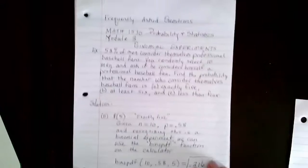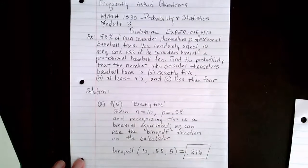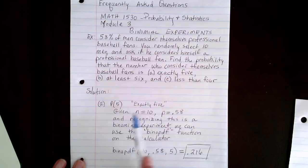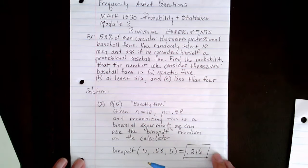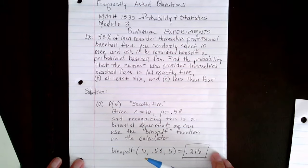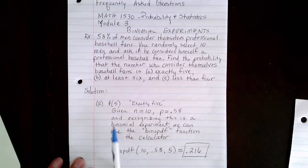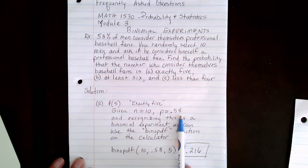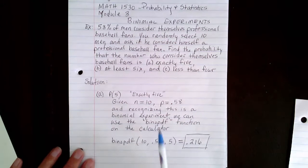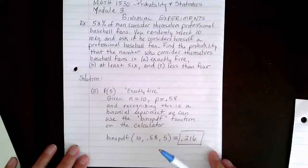Now let's go back to our problem and look at the solution. For part A, we were asked to find the probability that exactly 5 of the 10 men said they were baseball fans. We recognize this is a binomial experiment where the number of trials is 10, the probability of success is 0.58, and we can use the binomial PDF function on the calculator.